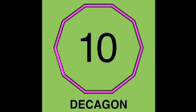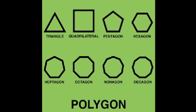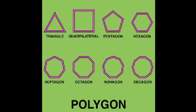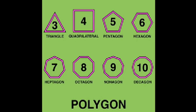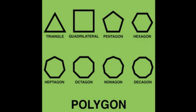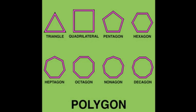A decagon is a polygon with ten angles and ten sides. A polygon is a shape with lines that connect. The number of sides tells us the name of the shape.